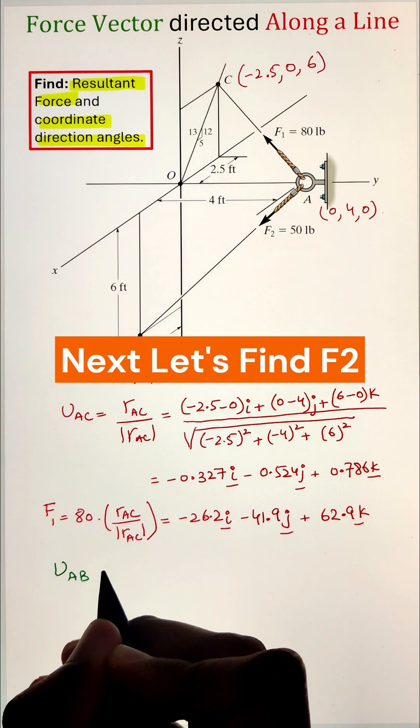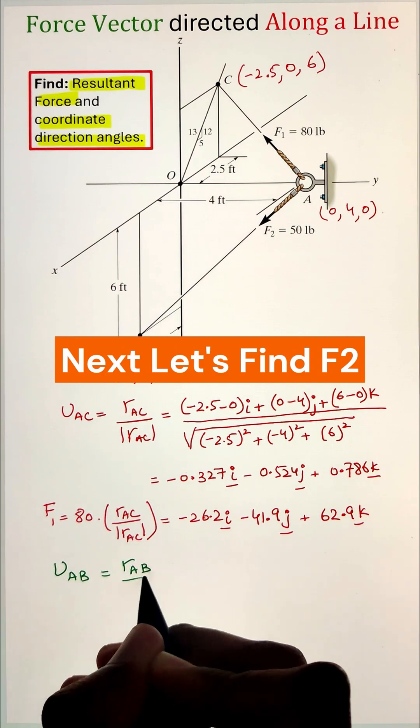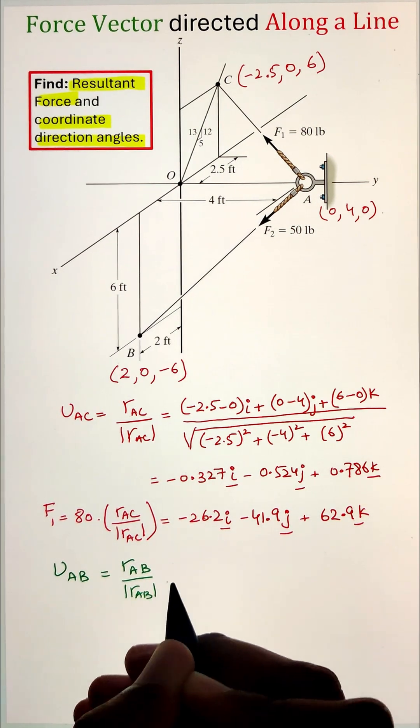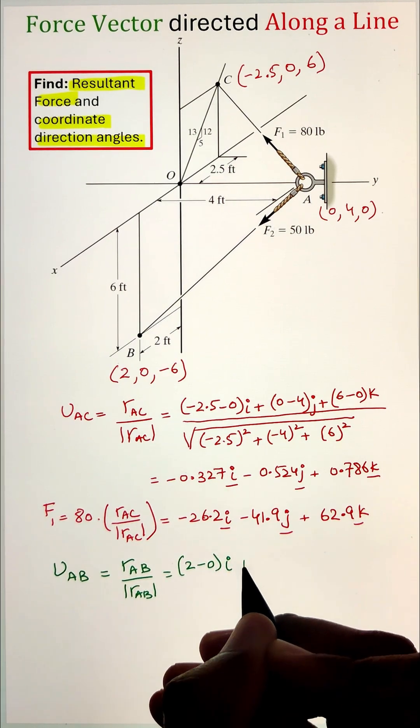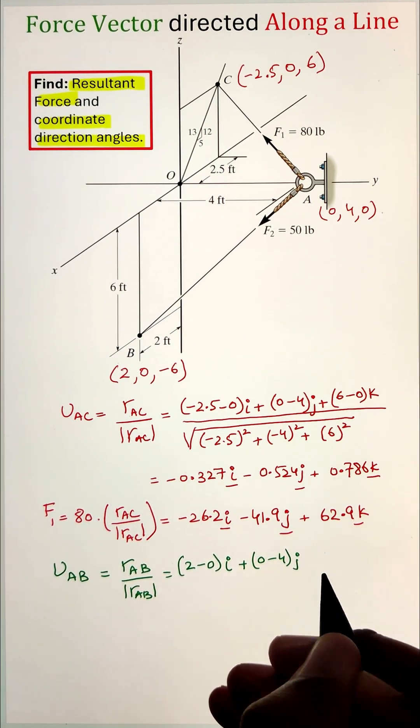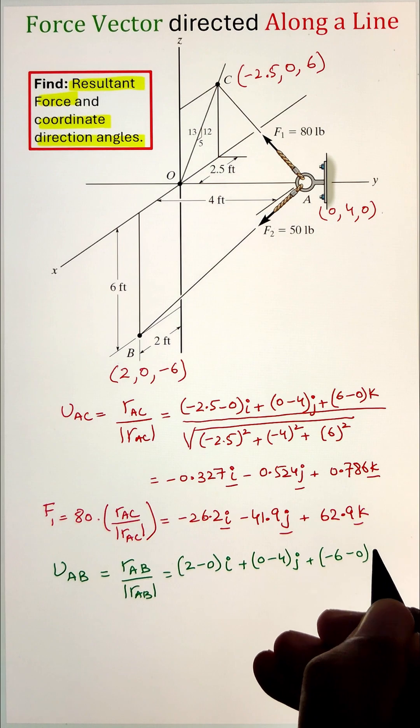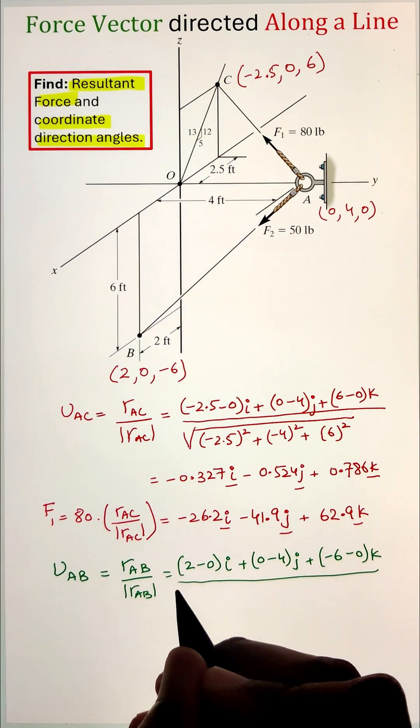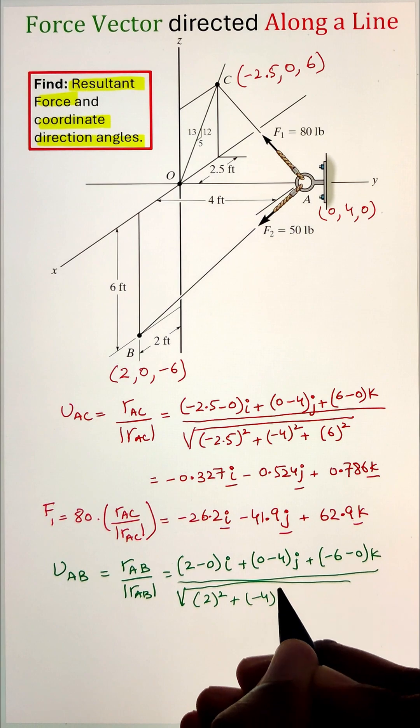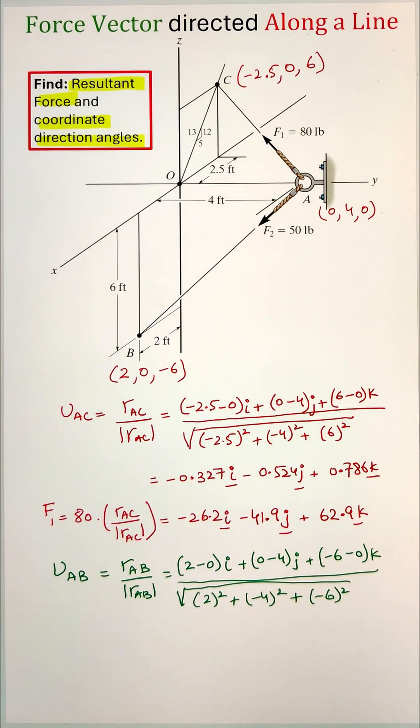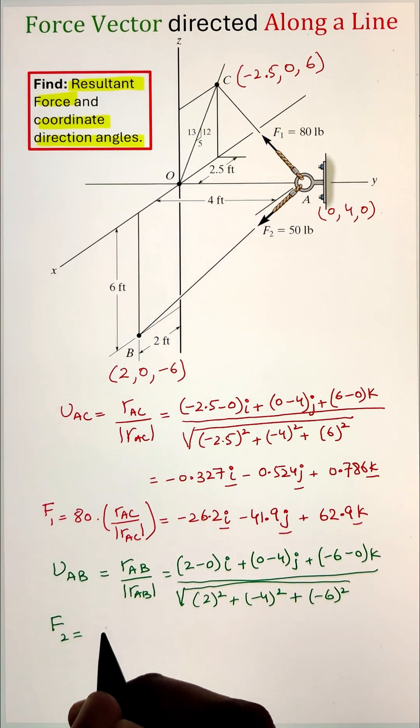We will repeat the same process for our force F2 by calculating the position vector of RAB and dividing it with the magnitude of RAB to calculate the unit vector of AB. Once we have the unit vector, we will again multiply that with the magnitude of force F2 of 50 pounds to calculate the force F2 in the Cartesian vector form.